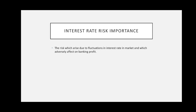The interest rate risk is the risk which arises due to fluctuation in the interest rate in the market, which adversely affects banking profit. When you provide a loan and charge an interest rate from that counterparty, that is your net interest income. That is why fluctuation in interest rate directly affects your bank profit. Always remember: there is a direct relationship between net interest income and bank profit.